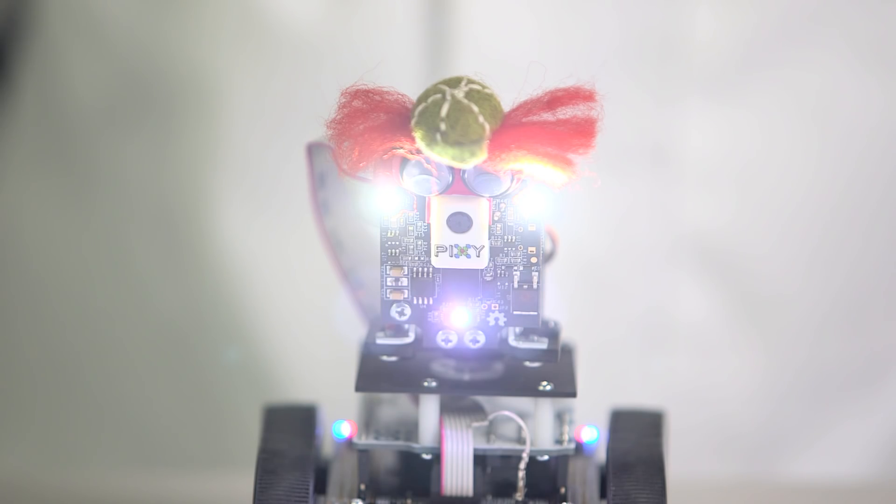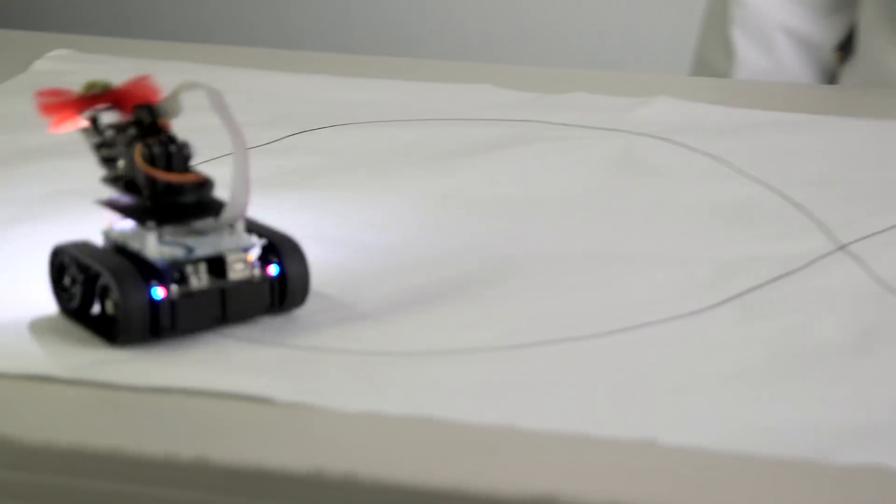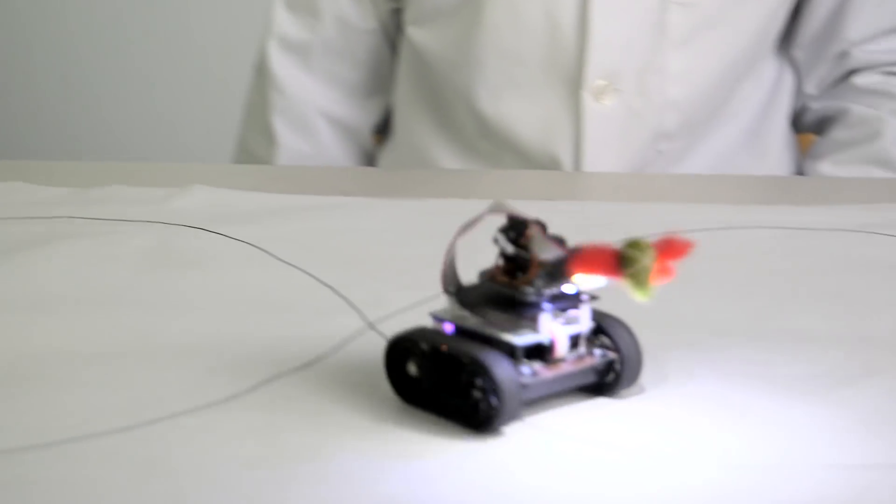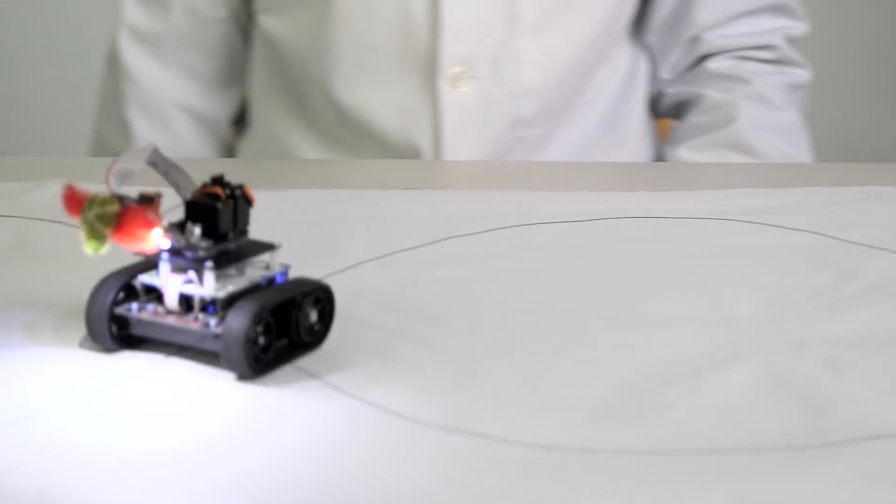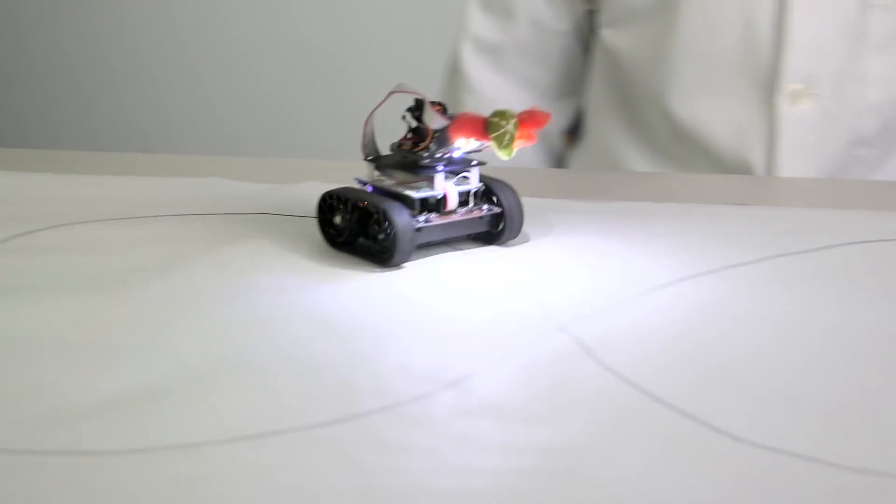Pixie 2 has also learned some new skills. It has new algorithms that can locate and track lines, and a built-in light helps it see better when the lighting needs a boost.